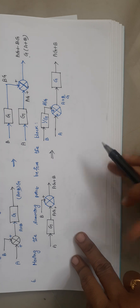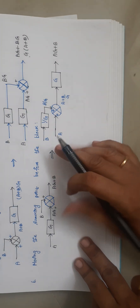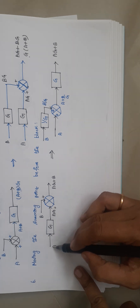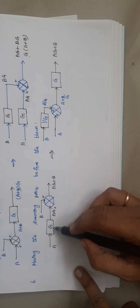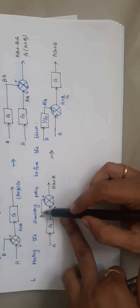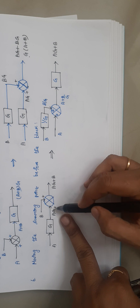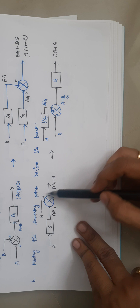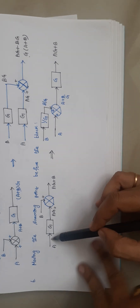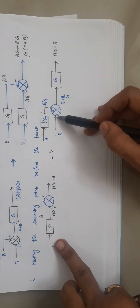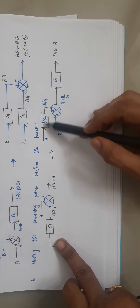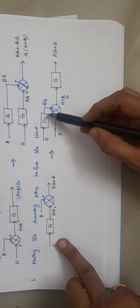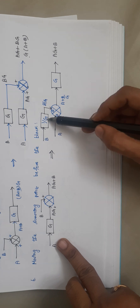The next rule is moving the summing point before the block. Here the summing point is after the block. Input A passes through block G giving A·G, and input B is added at the summer, giving output A·G + B. To shift this summing point before block G, the element you must add to the moved input is the reciprocal of G — that is, 1/G. The input B is given to block 1/G.